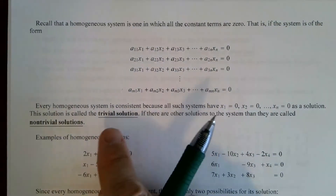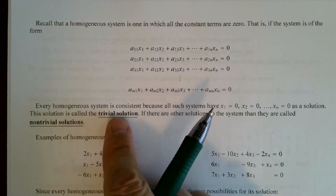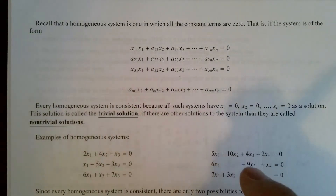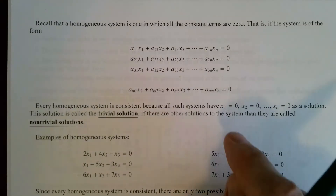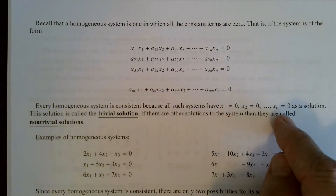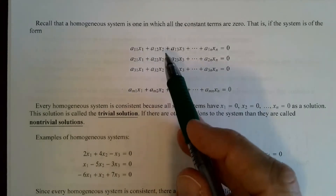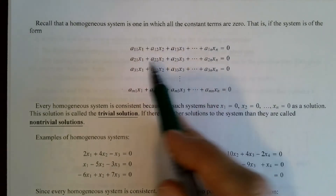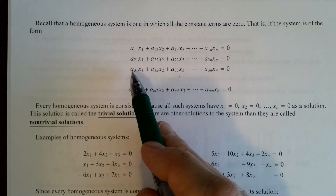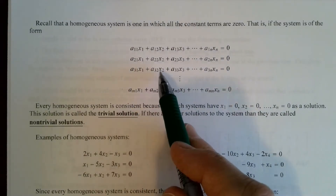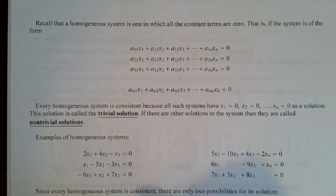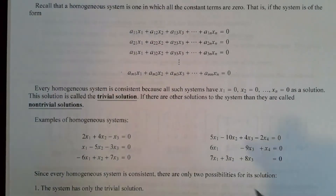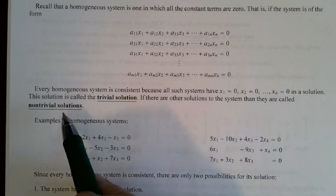One thing we know right away is every homogeneous system is consistent, because all such systems have what we call the trivial solution, where we just set all the variables equal to zero. Clearly, if x1, x2, x3, all the way to xn are all zero, then this will add up to zero each time, regardless of the coefficients. If there are other solutions to the system, then they're called non-trivial solutions.